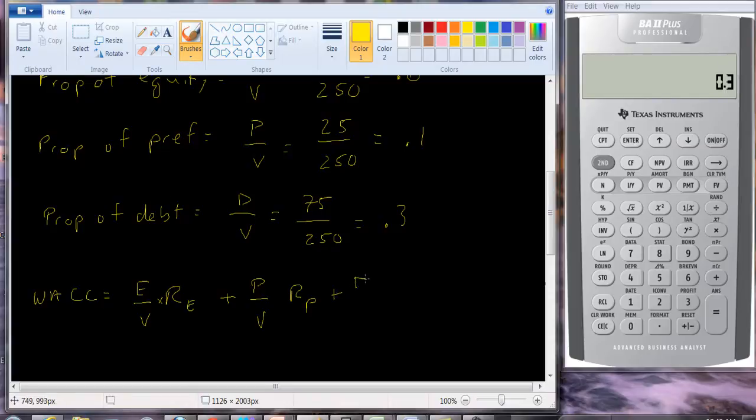And the return to debt, the proportion of debt is D over V, but the return that debt holders require is calculated using the yield to maturity. Now we have to do one more thing here with the debt, is we have to make an adjustment for taxes. So we have to multiply by one minus the tax rate. So this is our marginal tax rate.